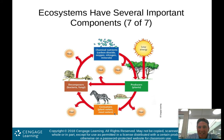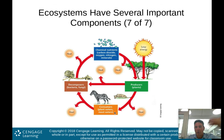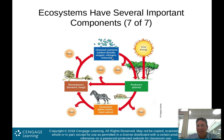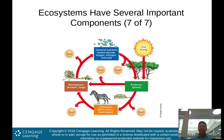Then we have the consumers — the plant eaters, the meat eaters — be it primary, secondary, or tertiary consumers. Then we have our decomposers, our bacteria and fungi, which take dead consumers or plants and break down that organic matter into chemical nutrients — carbon dioxide, oxygen, nitrogen, minerals — that go back into the soil and are used by producers to grow again.